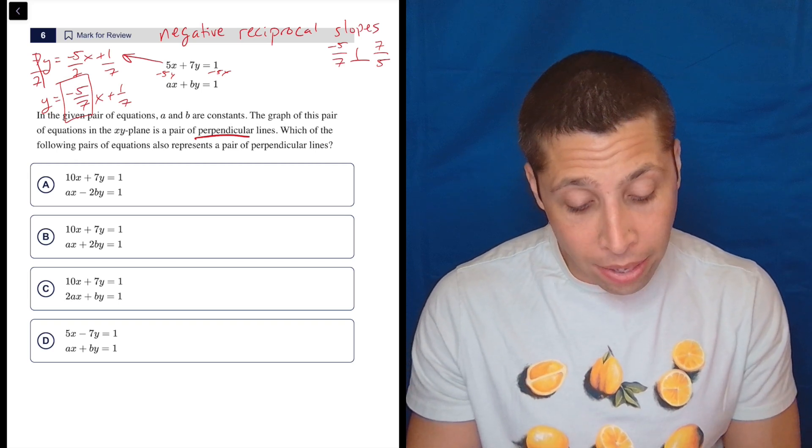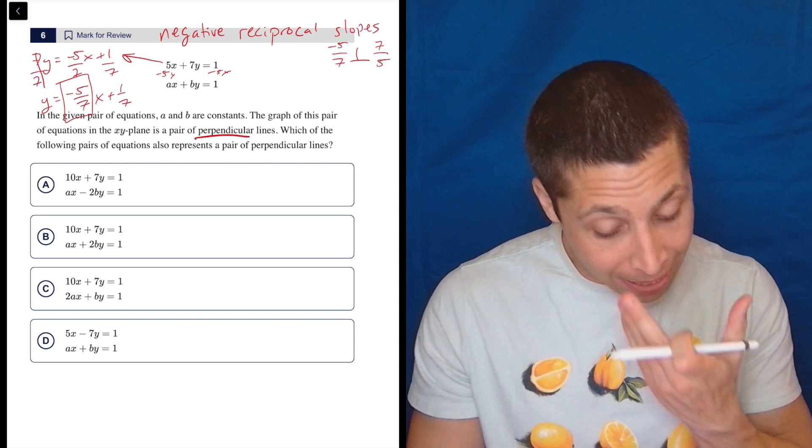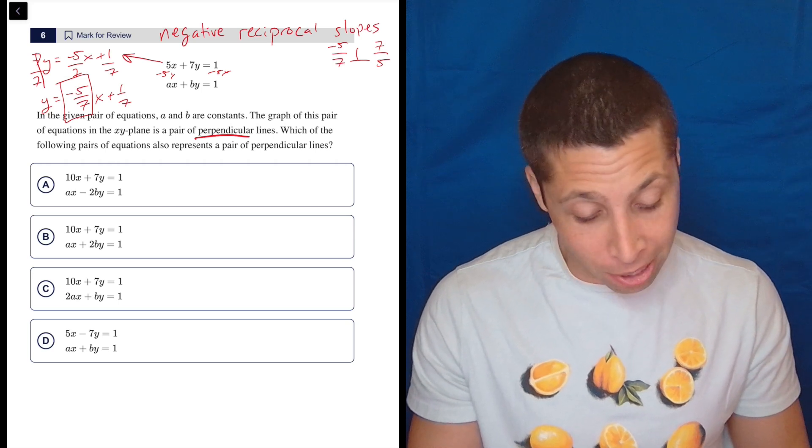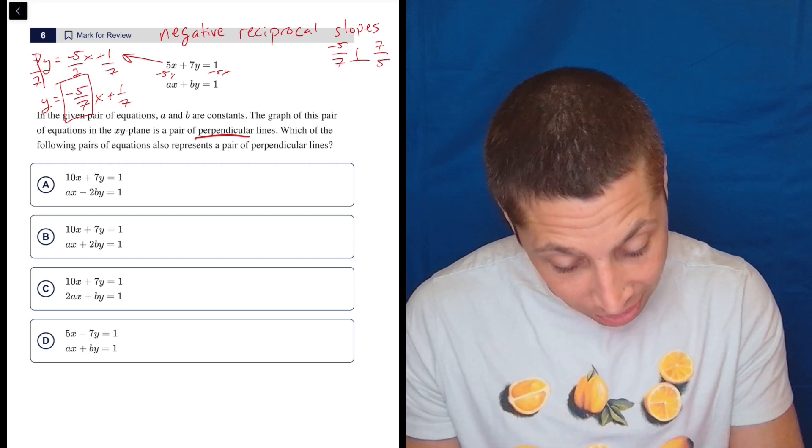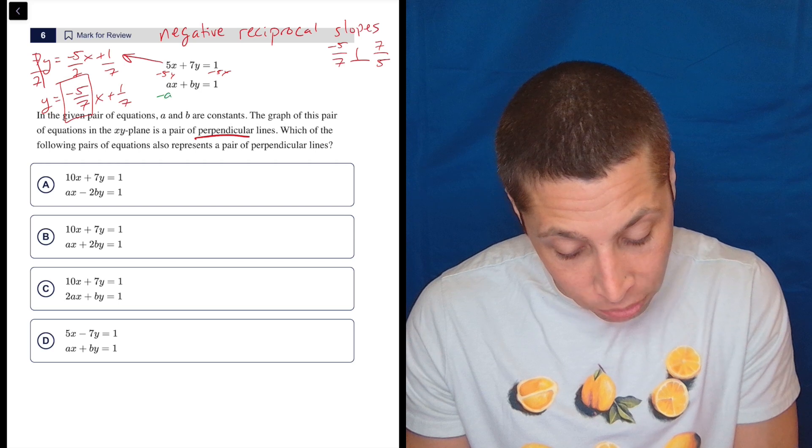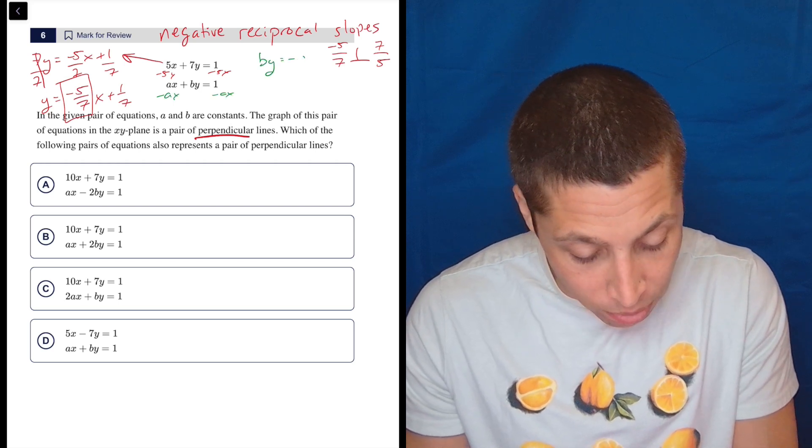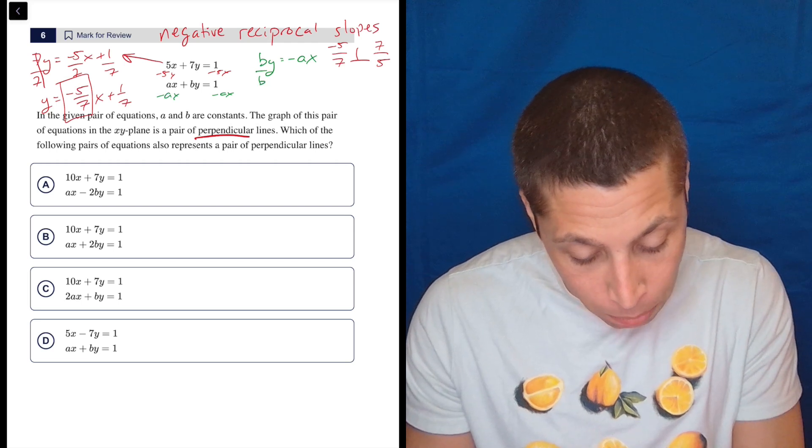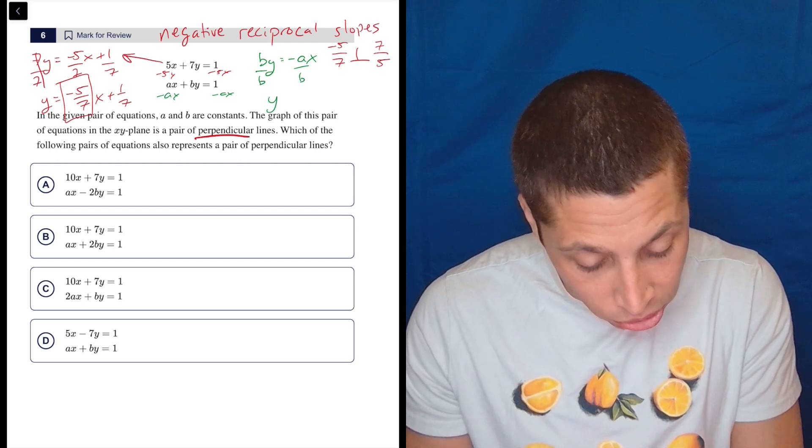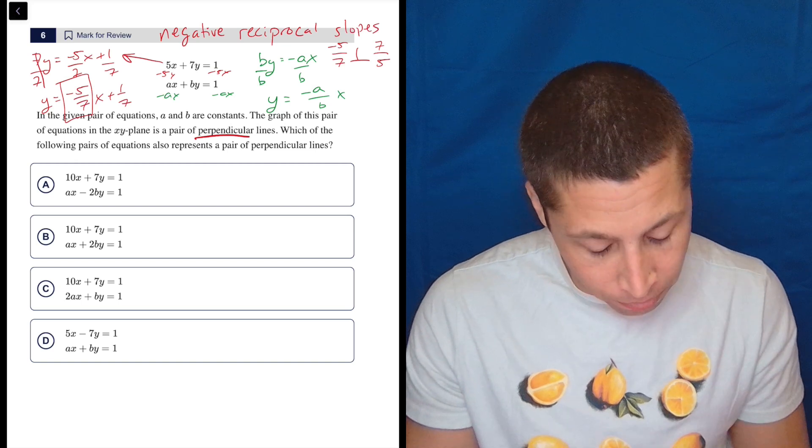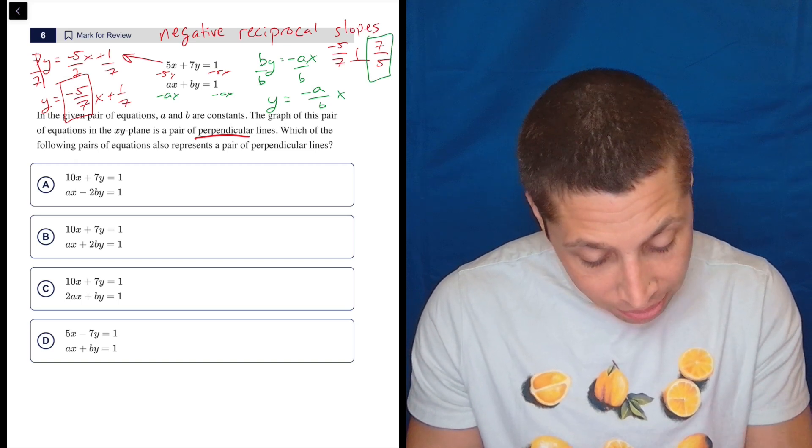So I have to do that with this a and this b, I guess, to see what those values would be. My guess is they're going to be 7 and 5, but let's just get this thing into y equals mx plus b format as well. So let's subtract the ax. So we get by is equal to negative ax. I'm going to drop the 1. I don't care about it. So b divided by b, we get our slope is negative a over b x.